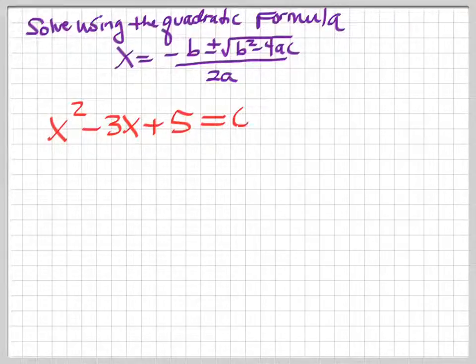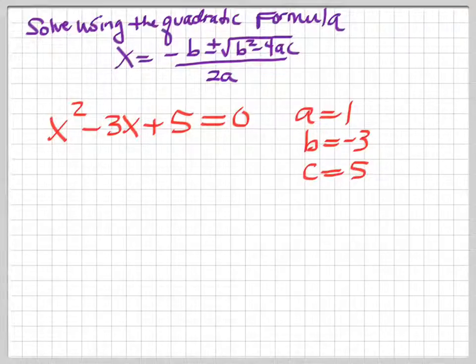So we'll solve x squared minus 3x plus 5 equals zero. It's in the right form because this is how we derive the quadratic formula, from general form where everybody's on one side, zero's on the other. So that's the only way we can get a, b, and c out of it. So a is 1, b is negative 3, and c is 5.